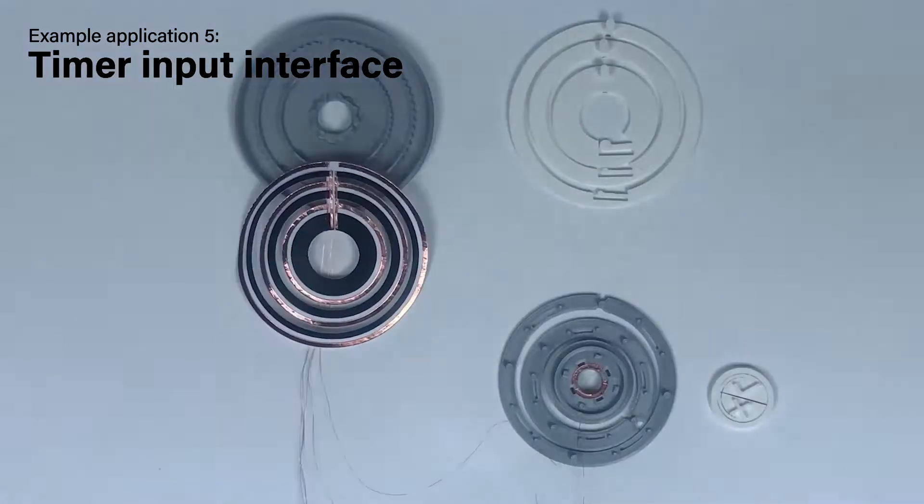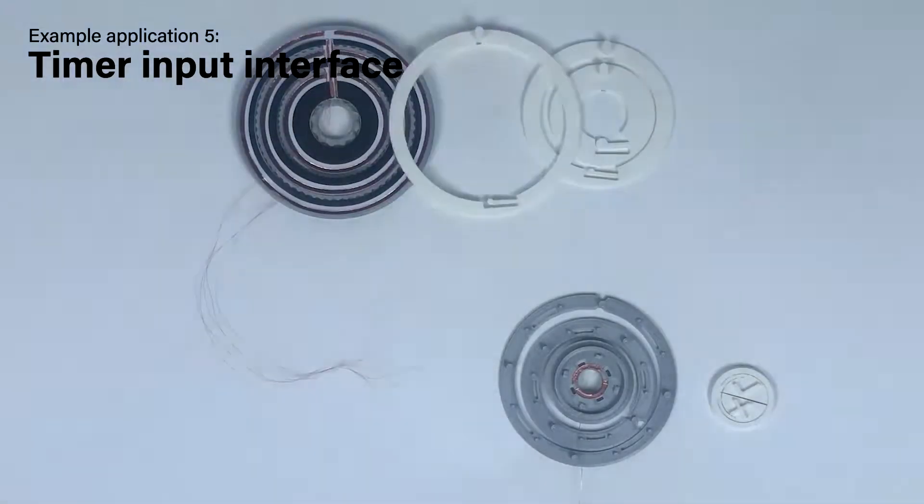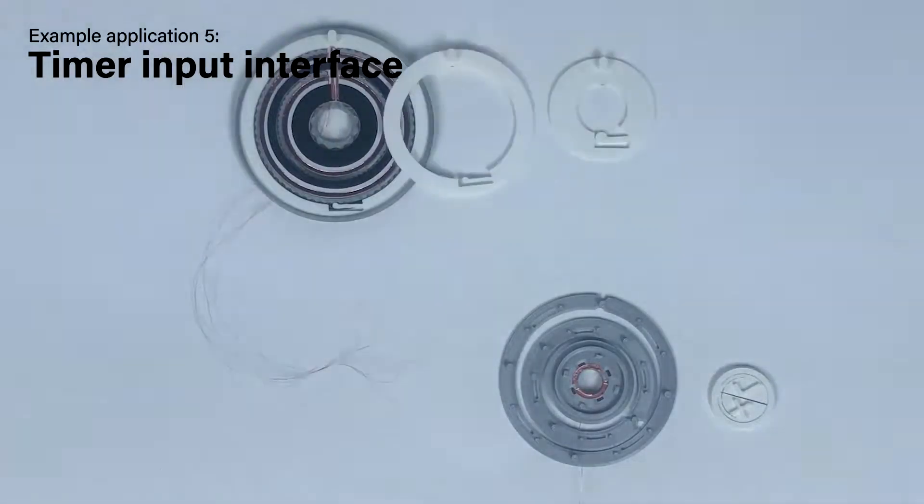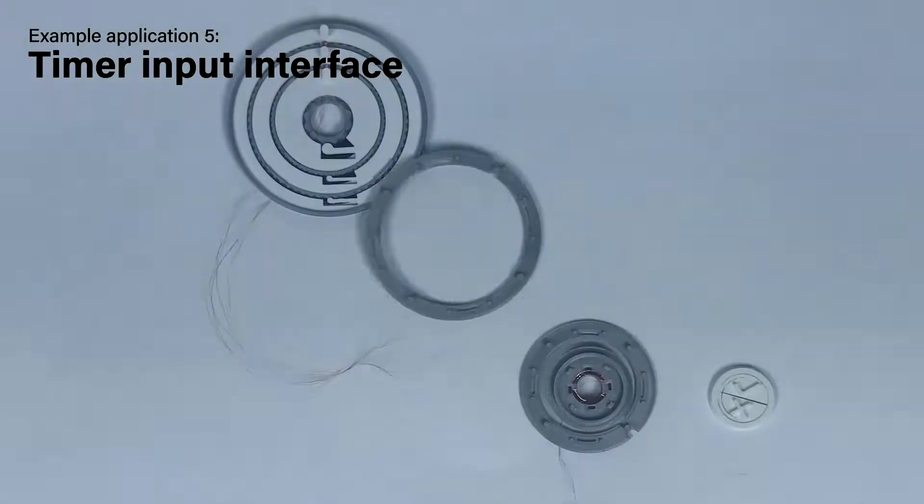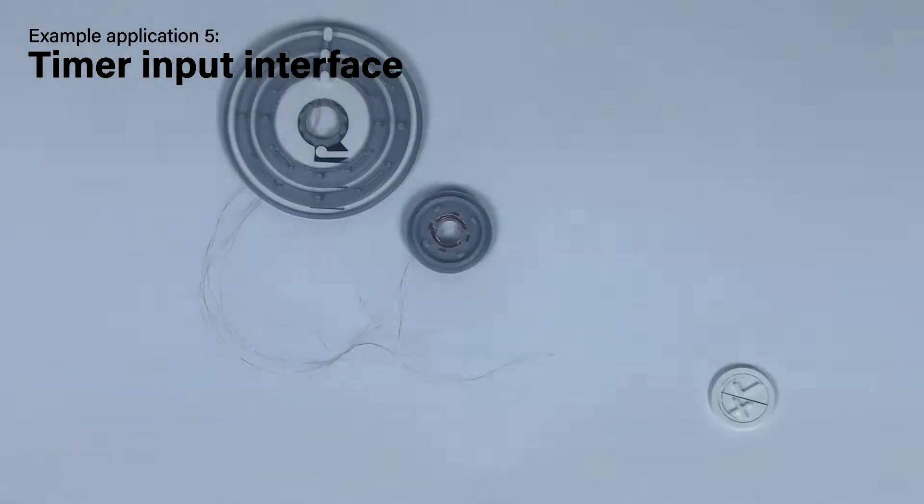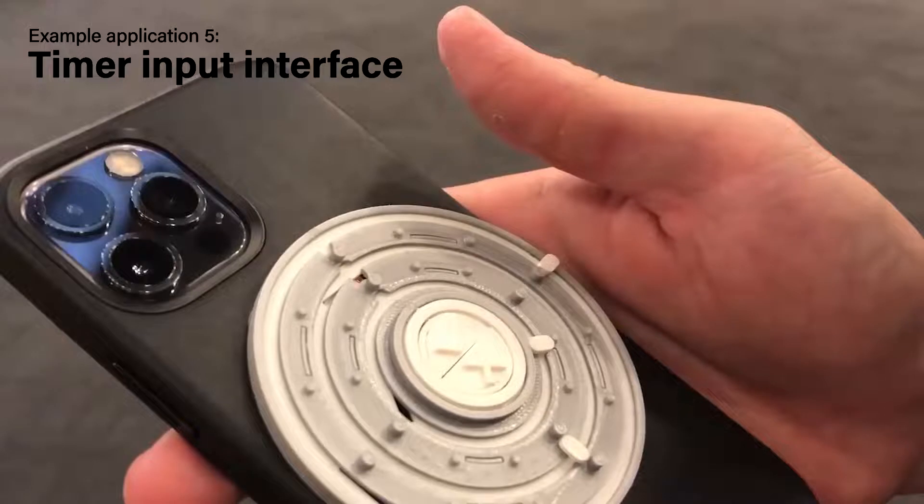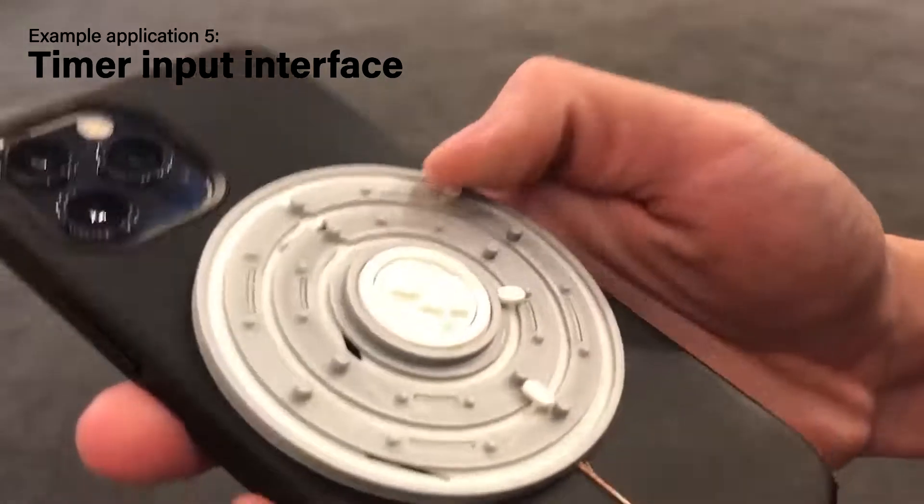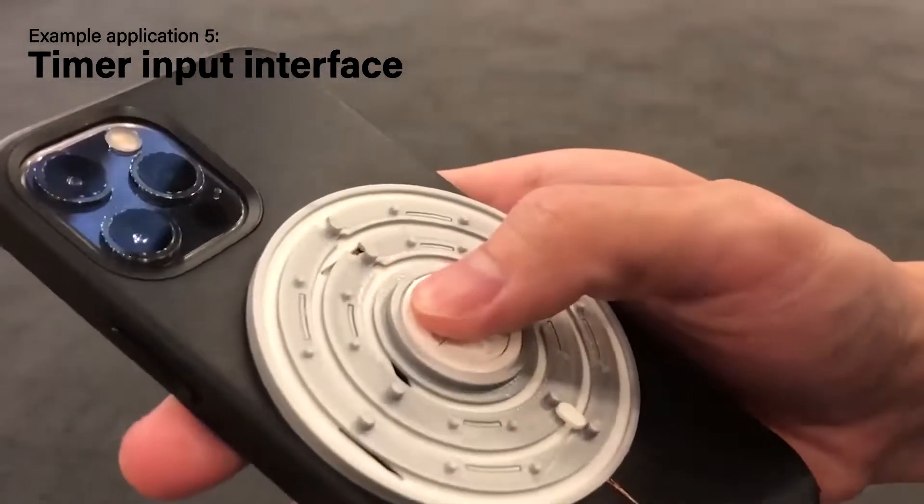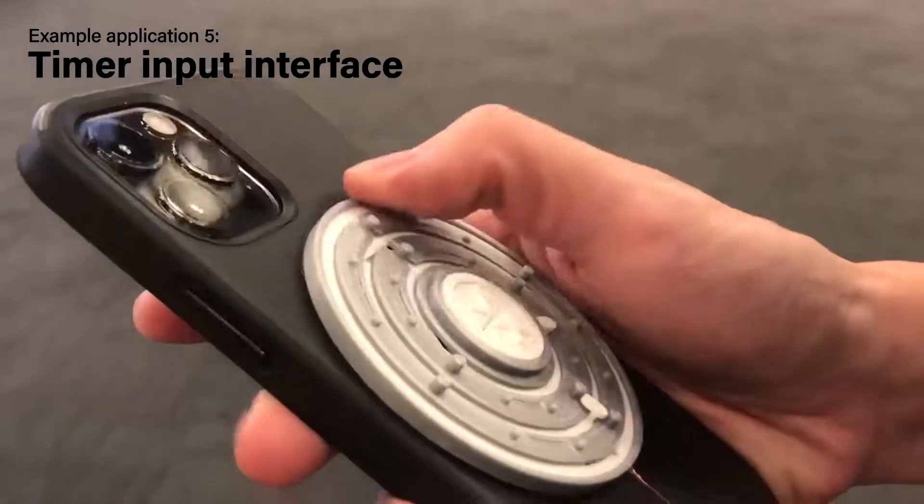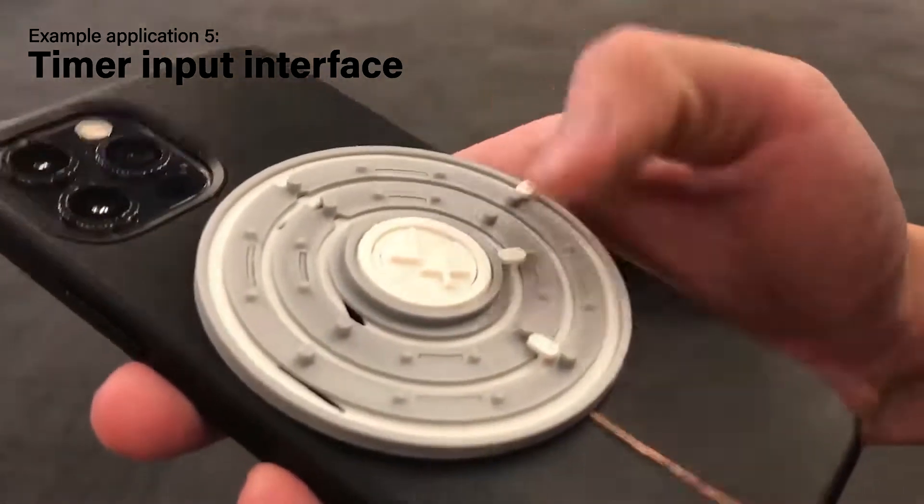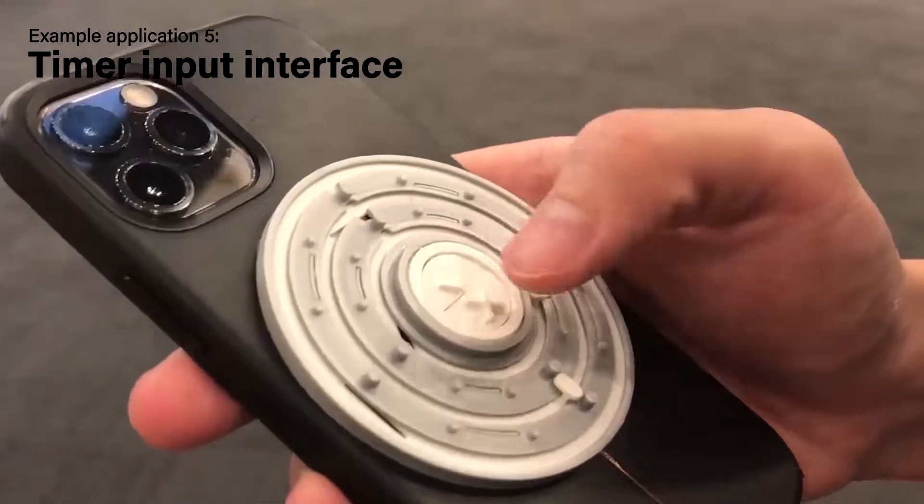We can connect flex haptics interfaces with embedded circuits to microcontrollers. For instance, with this example, we demonstrate a tactile timer input interface for low-vision people. Each dial consists of a rotary resistance module and a detent module. The hour, minute, and second dials present dynamic machine resistances and different detent distributions. Start and cancel buttons are made with auto-planar modules.